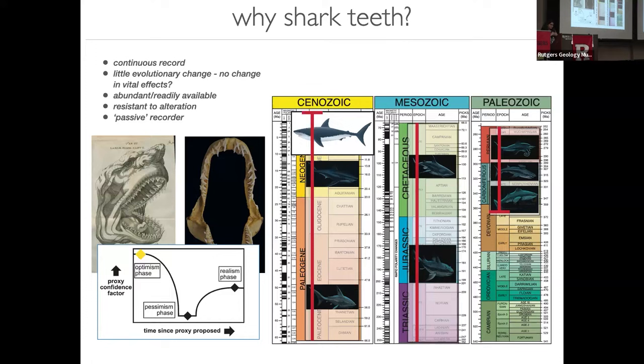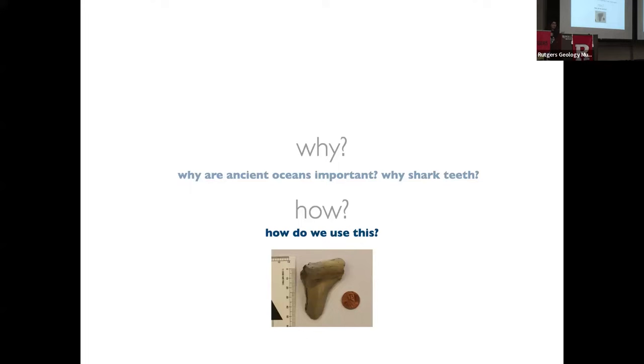So to borrow from one of the gods of geochemistry, Harry Elderfield, this proxy confidence factor thing is a great metaphor for, I also think, any research project where you've like identified a problem, you've done a little bit of your background reading, you've got your samples and you're like, oh, I'm going to solve the world, I'm going to help everyone figure everything out, I'm going to finish my PhD in four years. No. So that's a lie. Let's go to how.